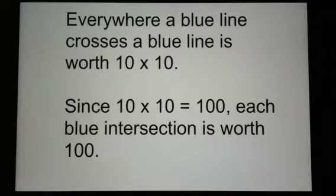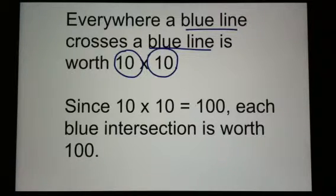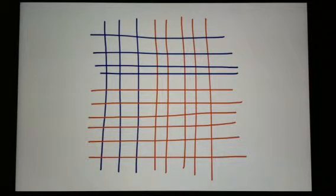Everywhere a blue line crosses a blue line is worth 10 times 10. Since 10 times 10 equals 100, each totally blue intersection is worth 100. So in this case, I've got blue crossing blue right here.